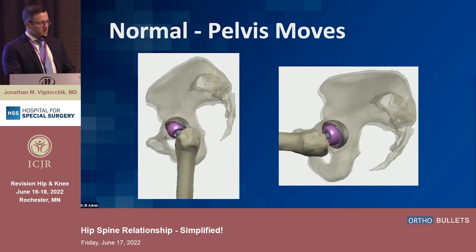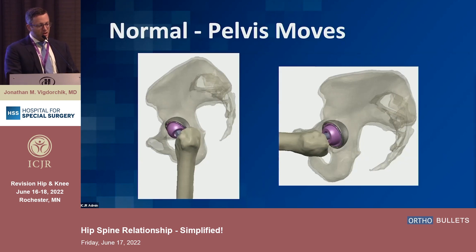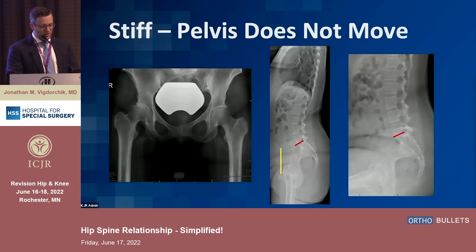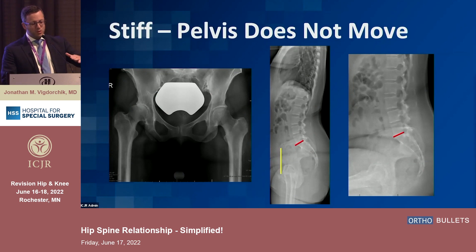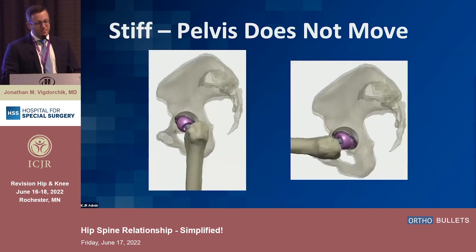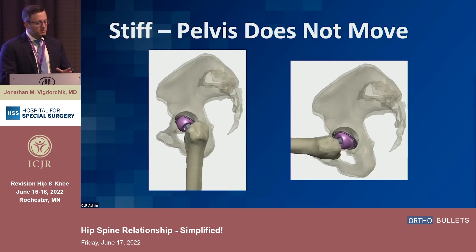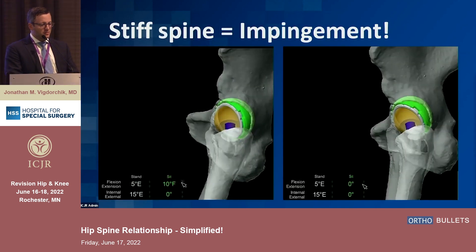Almost all posterior dislocations happen when somebody is sitting or bending forward. In a normal case, the pelvis rolls back and the cup opens up. In a stiff-spine situation, the sacrum doesn't move from standing to sitting, the cup doesn't open up, and when you lean forward you impinge and dislocate. This is why the hip-spine relationship is important — you're causing earlier impingement and dislocation.